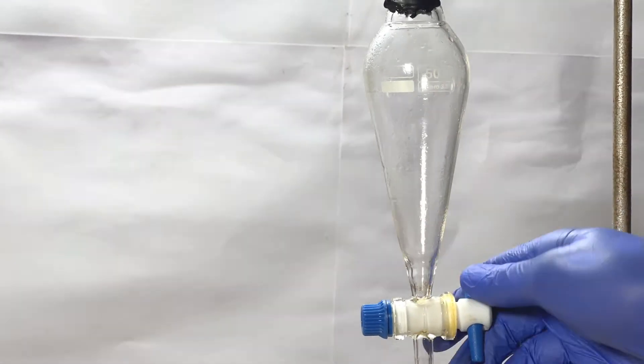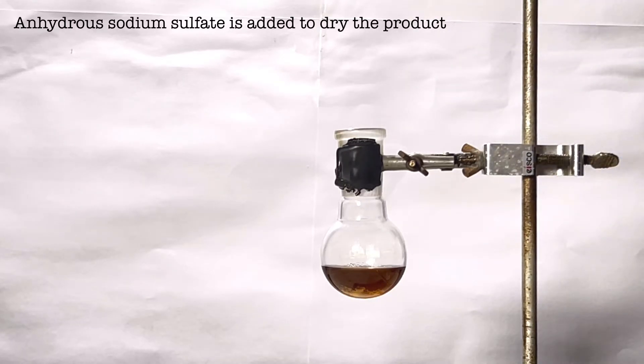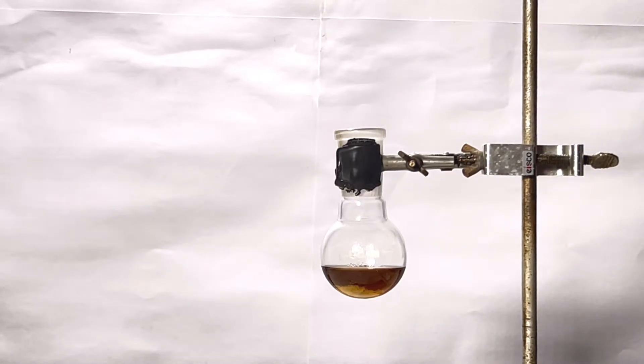Finally, the product was transferred to a round bottom flask. Anhydrous sodium sulfate was used to dry the product. We can see the sodium sulfate crystals freely flowing in the bottom of the flask and this indicates that the drying is complete.